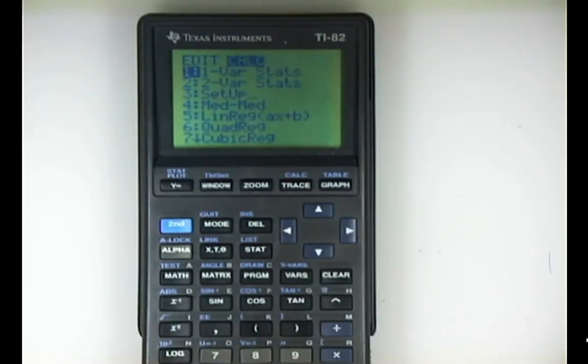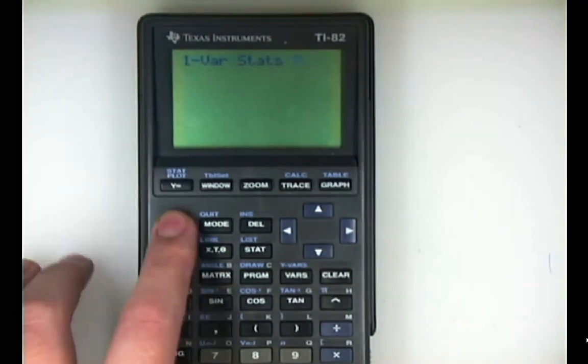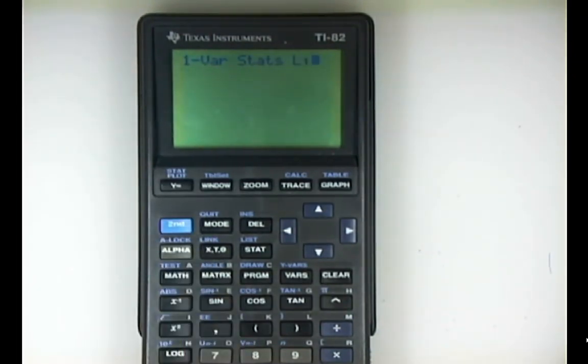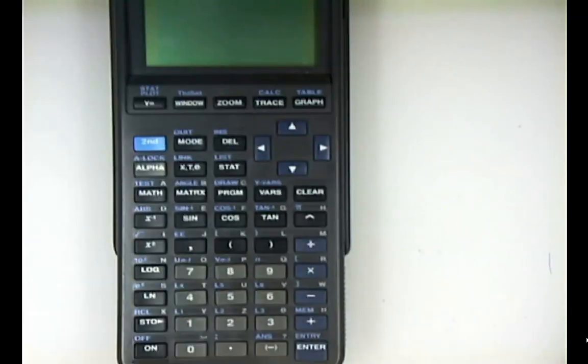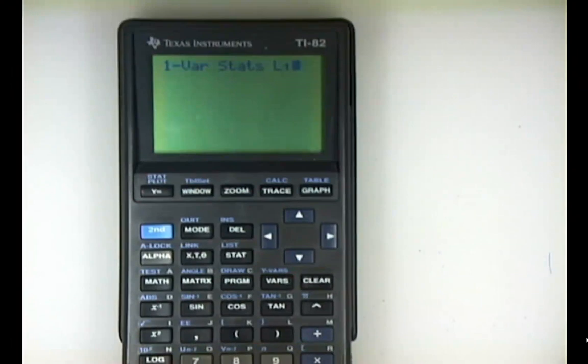We're going to bring up some one-variable statistics using only list one. You would select one-bar stats and it'll prompt you for a list name. You say second number one to get L1, then it blinks for a minute and you press enter.